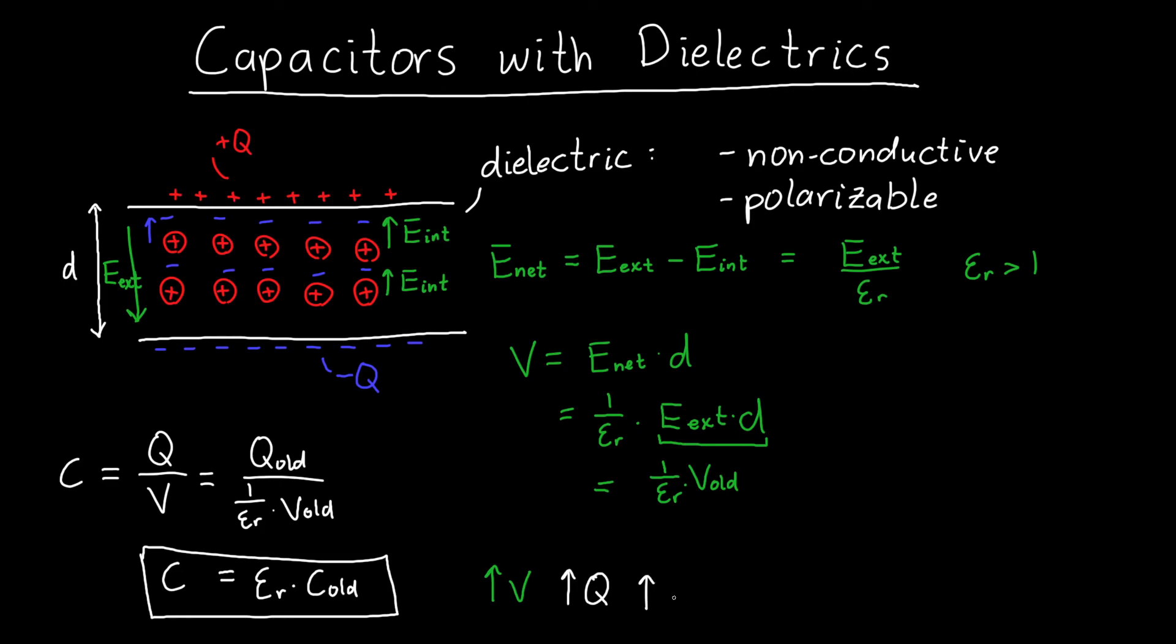And similarly, I can also store a much higher energy, because energy is one half CV squared. So at a fixed voltage, because my capacitance is higher, I can store more charge and I can store more energy. And that's very useful.